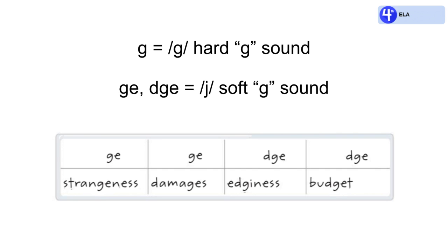Lastly, we have the word budget. DGE makes the J sound. It's the word budge plus T: budget.